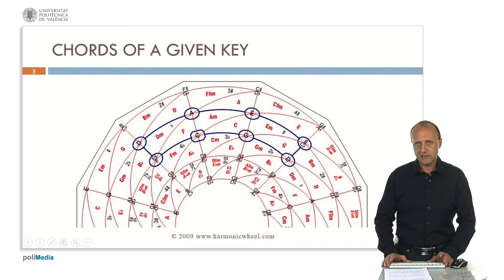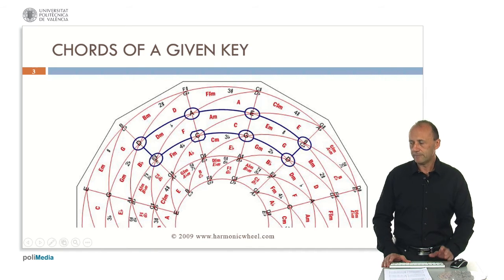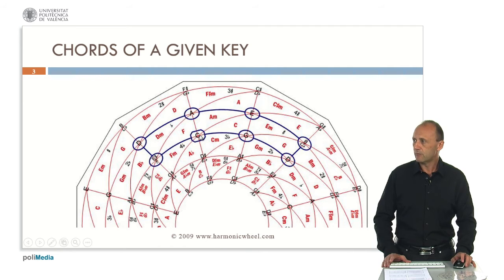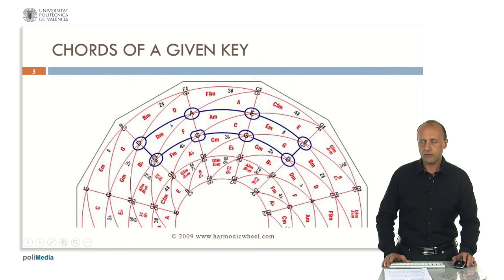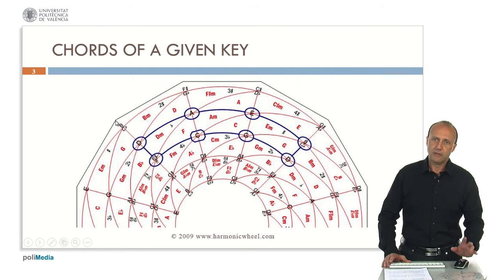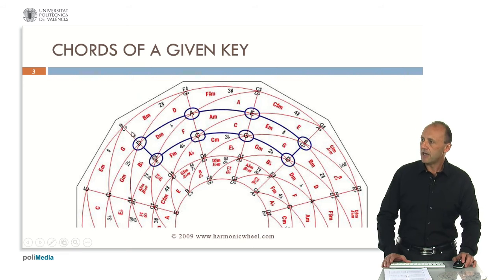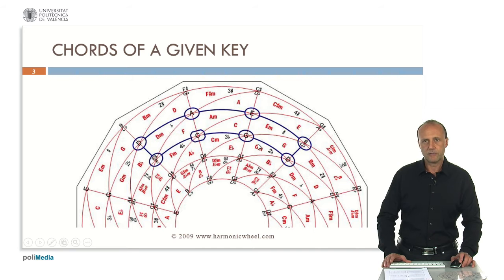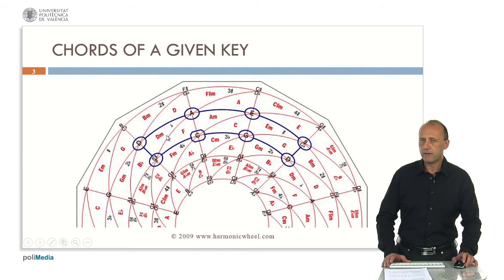Here we have represented the C major key on the harmonic wheel. The tonic is inside a small rectangle and the other notes of the scale are inside circles. We have not represented the other notes outside this big curved rectangle. Inside this blue rectangle, we have the six consonant chords associated to the C major key: the three major chords C, F, G and the three minor chords E minor, A minor, E minor.